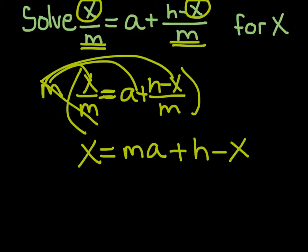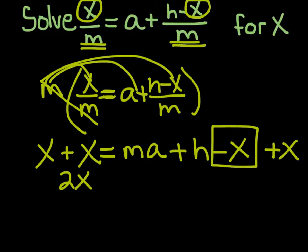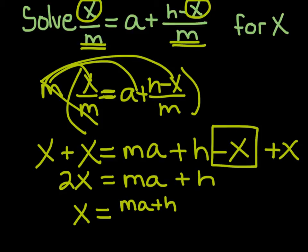So now what I need to do is take this minus x, and I'm going to basically combine like terms. So I'm going to add x to each side, and x plus x gives you 2x. So 2x equals ma plus h. See what I'm doing here? And then x equals, we're going to divide it all, and you have to do every single bit of it, ma plus h all over 2.